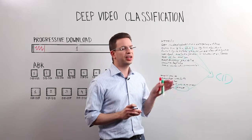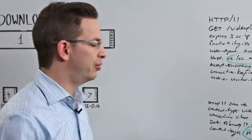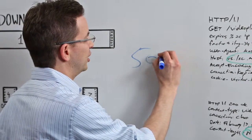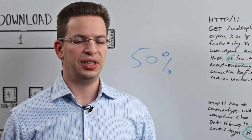The reason why that is important is that with this technology, with deep video classification, QUILT is actually able to achieve 50% caching efficiency for all video content, be it adaptive bitrate or progressive download.